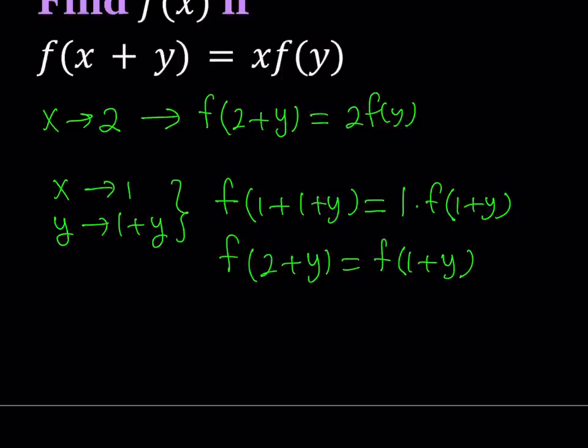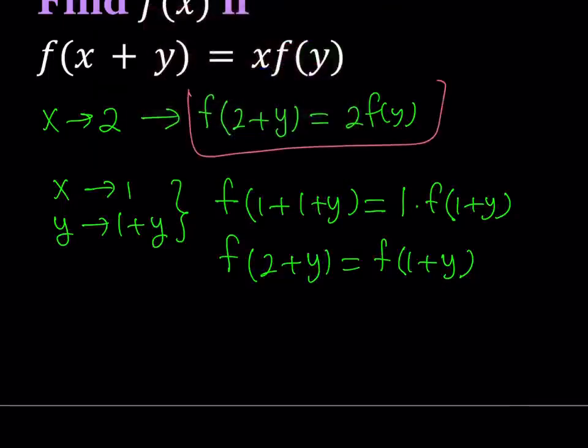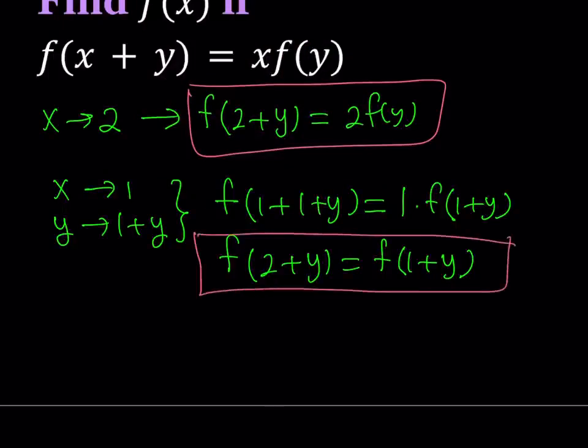So does that mean f is a constant function? Is it linear? Is it something else? Let's find out. Now, I was trying to get f(2+y) in two different ways, and I did. So this is f(2+y), and this is f(2+y). Since two things are equal to the same thing, then they're equal, so I can safely say that from here, 2f(y) = f(1+y).